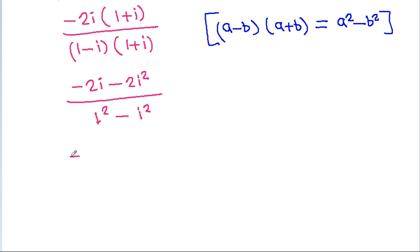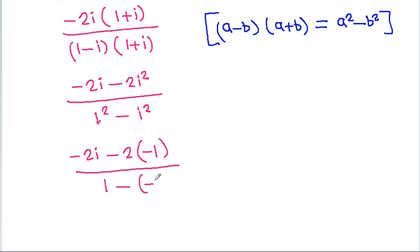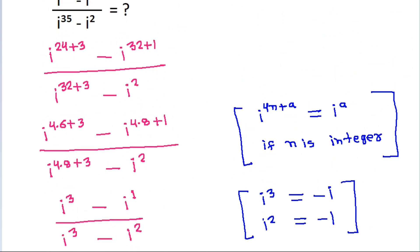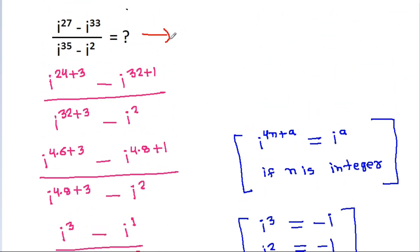And it is minus 2A minus 2 times A squared, where A squared is minus 1, divided by 1 squared minus A squared where A squared is minus 1. So it becomes minus 2A plus 2 divided by 1 plus 1, which is minus 2A plus 2 divided by 2, giving minus A plus 1, and that is equal to 1 minus A. Thank you.